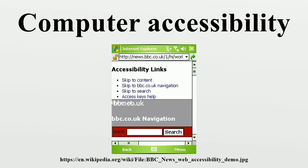Hearing impairment: While sound user interfaces have a secondary role in common desktop computing, usually limited to system sounds as feedback, software producers take into account people who can't hear, either for personal disability, noisy environments, silence requirements, or lack of sound hardware. Such system sounds like beeps can be substituted or supplemented with visual notifications and captioned text. Closed captions are a very popular means of relaying information in the hearing impairment community.